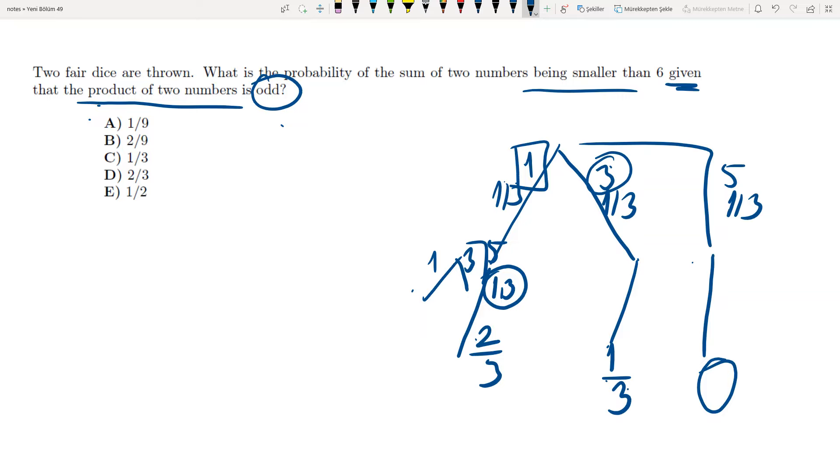So I have my simple tree. And I just multiply these probabilities. I multiply up to the branches and I sum them up.